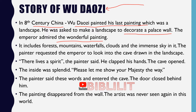The painting included forests, mountains, waterfalls, clouds, and the immense sky. The painter requested the emperor to look into the cave drawn in the landscape, saying that a spirit lives there.